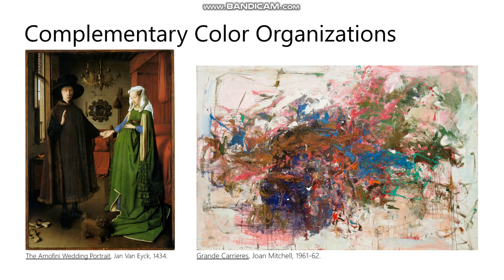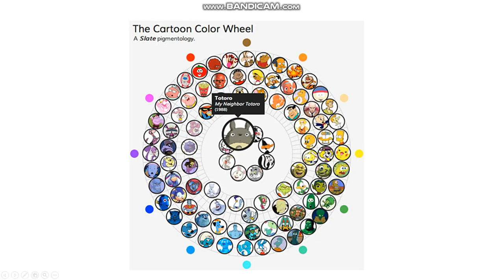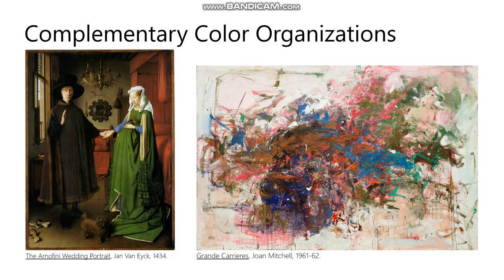Complementary color organizations are where one of the primary color ideas is the pairing of two colors that are close to opposite sides of the color wheel. For example, the yellows are close to complementary to the violets, and reds across from greens. In the case of the Arnolfini wedding, although there are lots of neutral colors, the primary force of the painting is the pairing of the green with the red behind it — that complementary pairing is the most important color idea. Similarly, the blue and blue-violet pairing with oranges and orange-reds is the primary idea in another example.